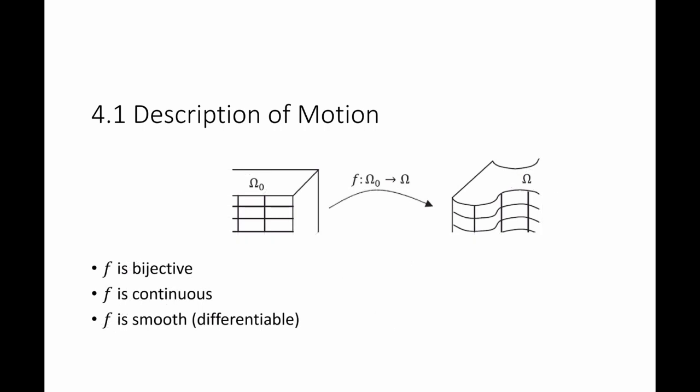There are certain restrictions on the possible forms of this mapping function. First, this mapping function has to be bijective, because as the object deforms, physically, the material points in the reference configuration have to match the material points in the deformed configuration. Also, we are usually concerned with physical phenomena that ensure f is continuous, meaning there are no cracks that form in the object as it deforms. Also, f is smooth or differentiable, which allows us to calculate what we call strain. We will explain this further when we talk about the measures of strain.